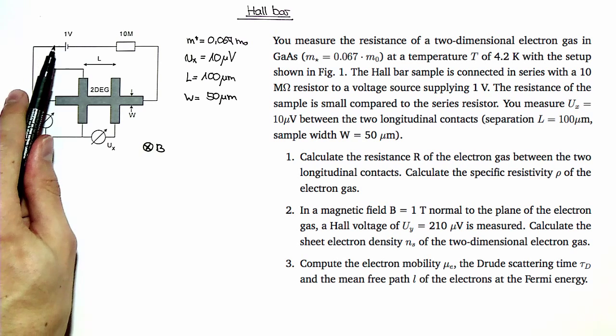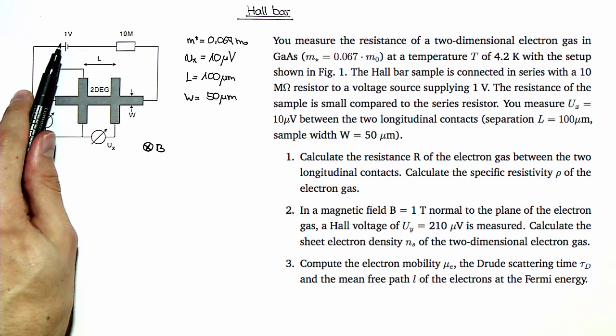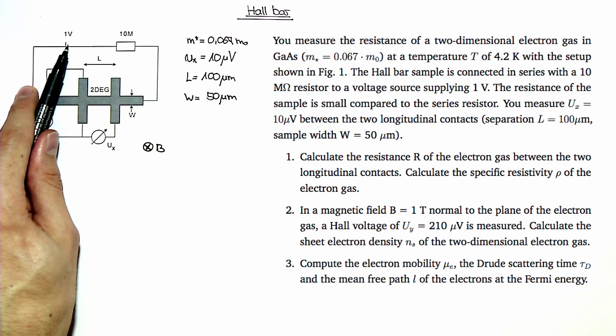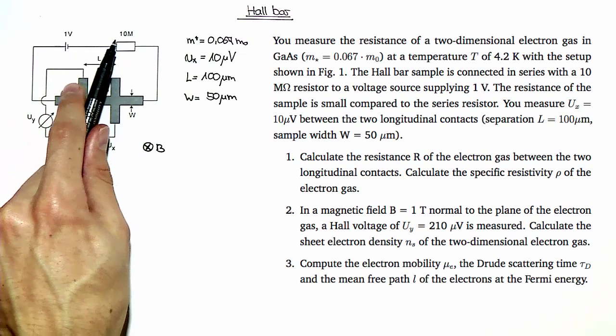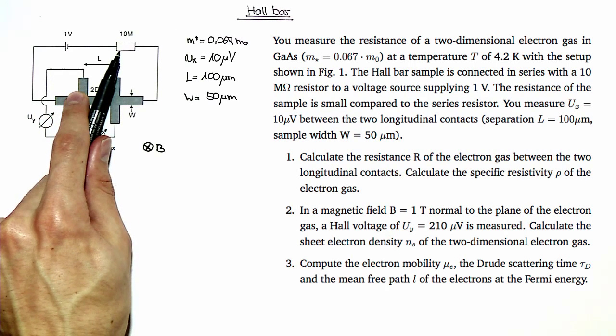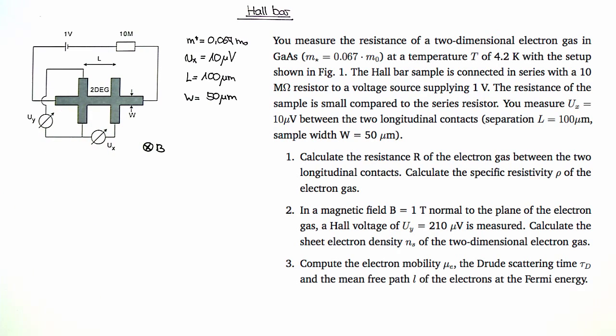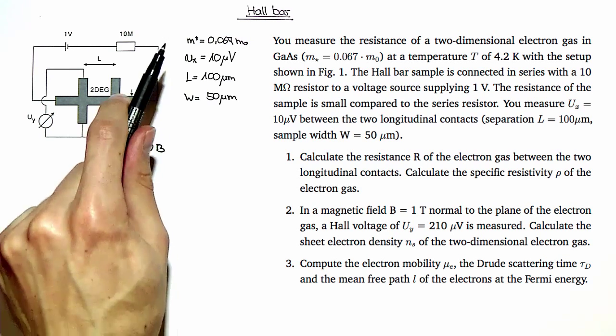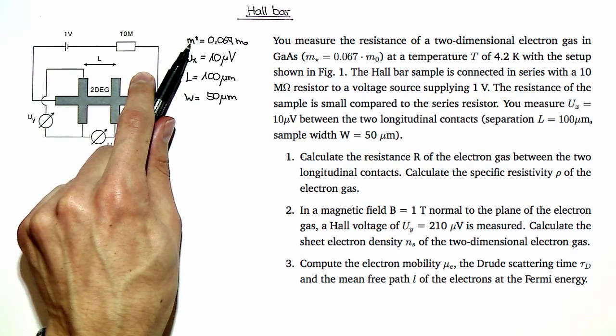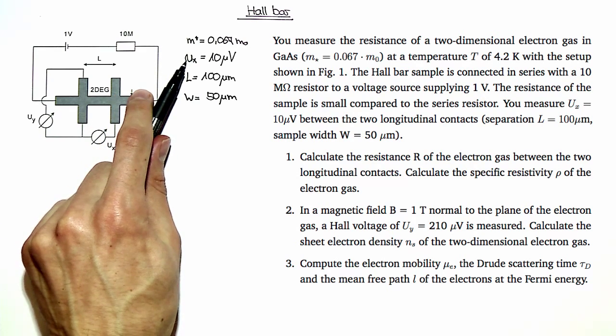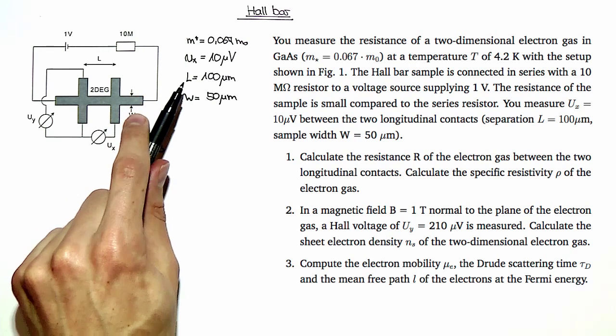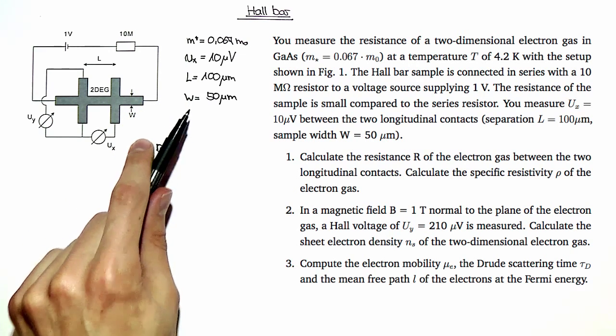In the hole bar geometry, a voltage source provides a current through the structure that is basically determined by this 10 mega ohm resistor, which is much larger than the resistance of the sample. There are several quantities given in the problem set, which are the effective mass, the longitudinal voltage drop, as well as the geometric quantities L and W.